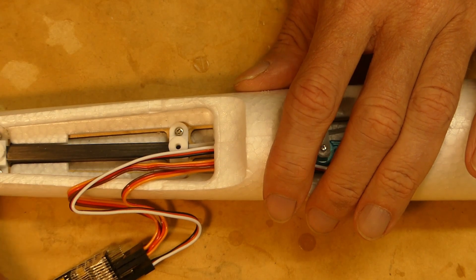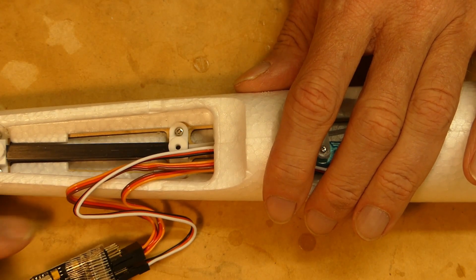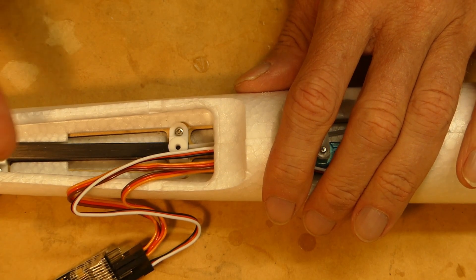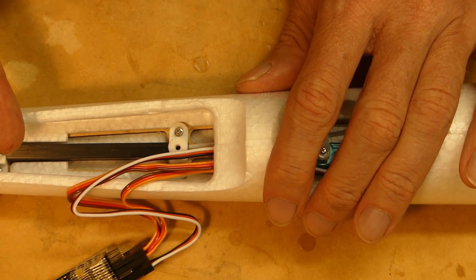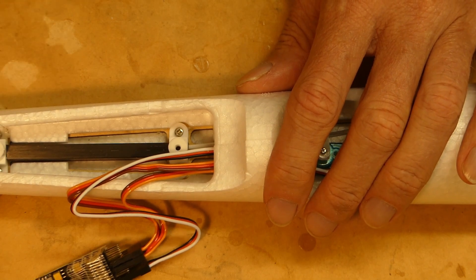I also got the receiver. This is a LEMONRX LM0051U, 4-Spectrum, with built-in altimeter and vario which is good fun when you're thermaling. Highly recommended.